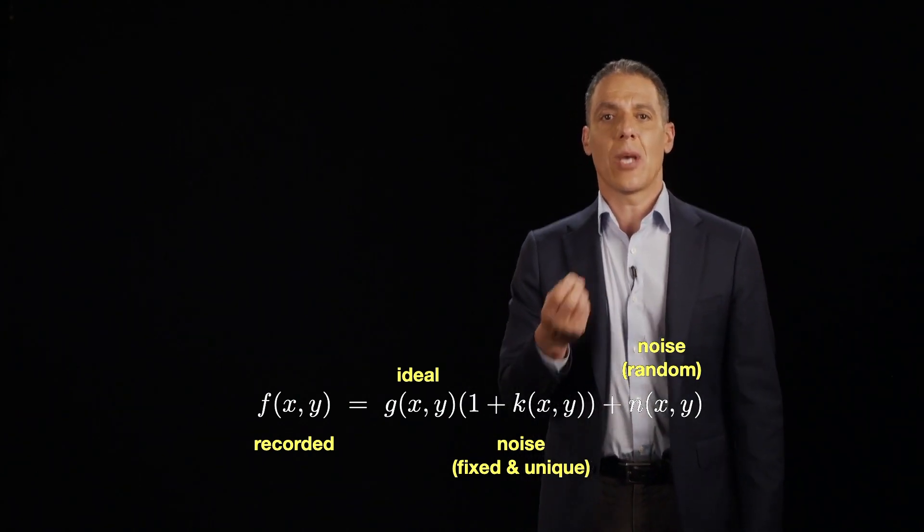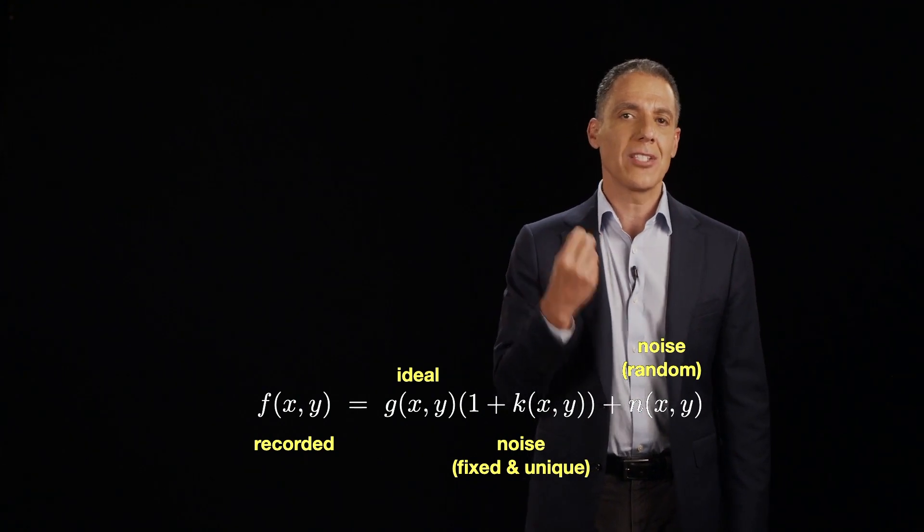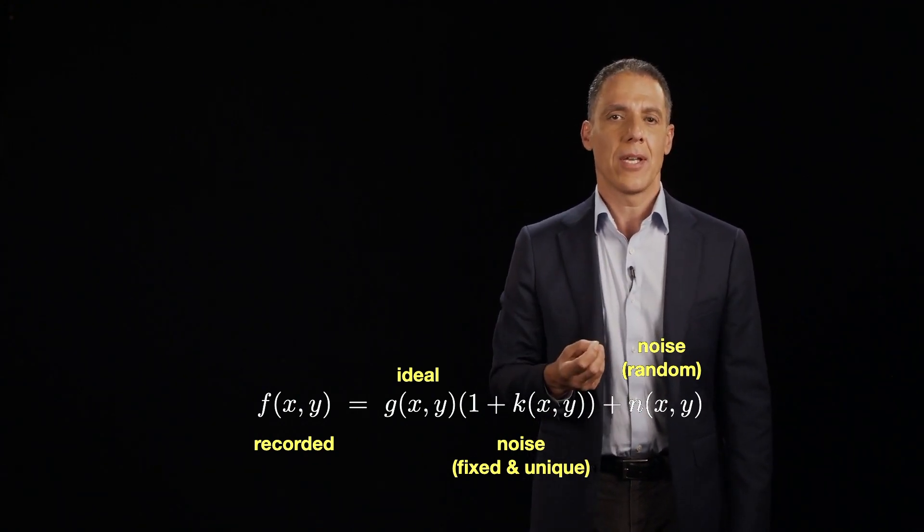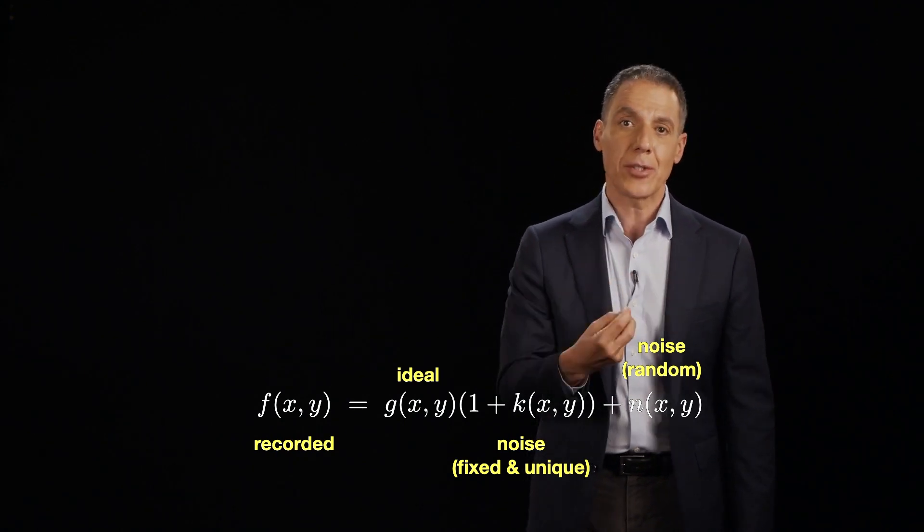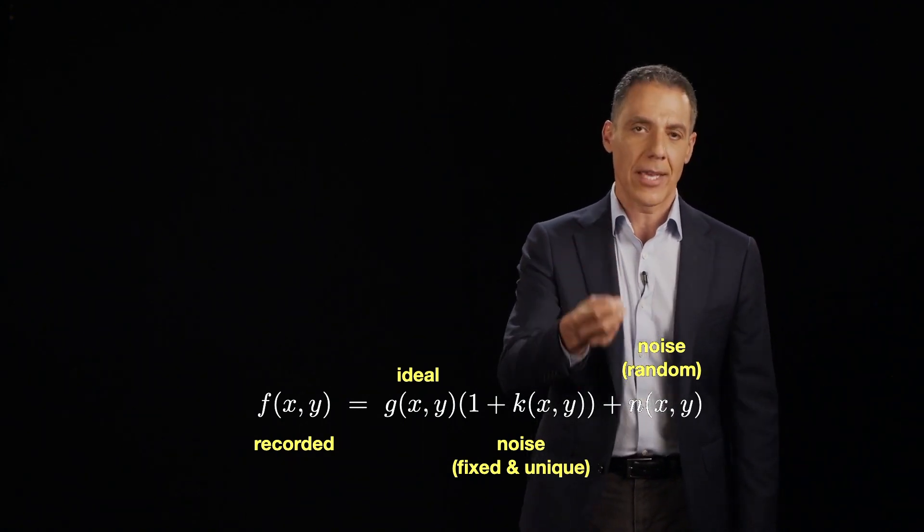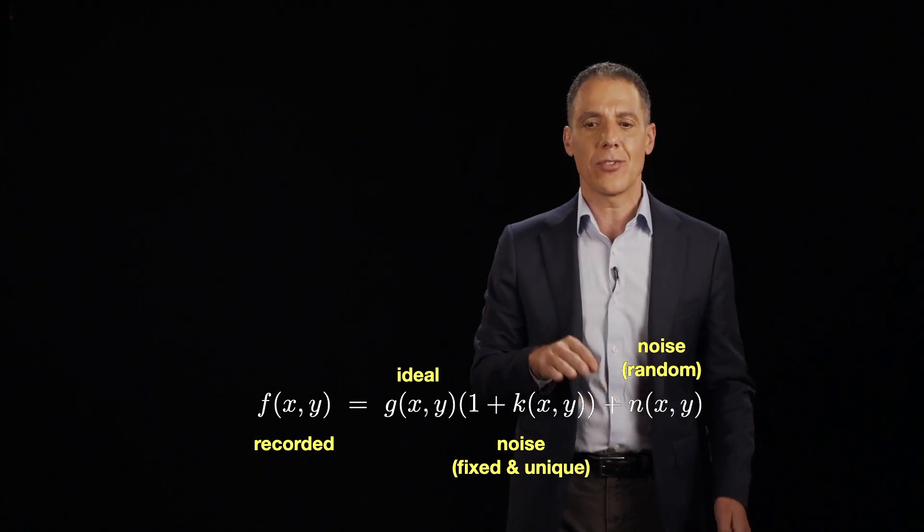Which means that some pixels will tend to over count the number of photons consistently day in and day out. And some cells, some pixels will tend to under count every day, day in and day out.